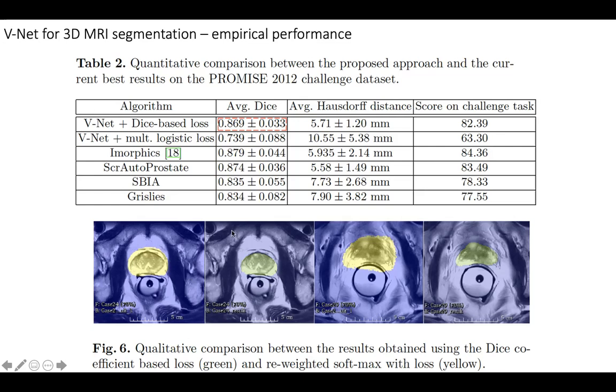Here the authors compare the result from the model with two different training loss functions: one is the dice score loss, and another one is the softmax cross-entropy loss. You can see that there is a difference between these two segmentation results.